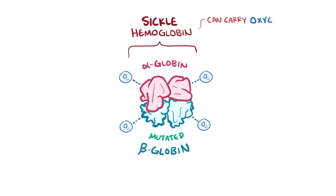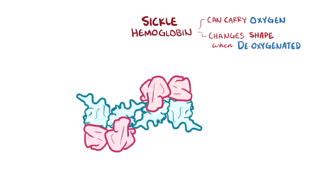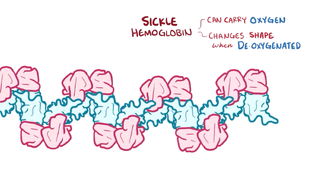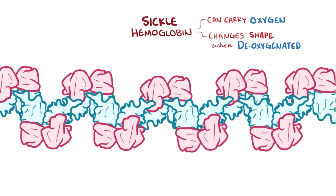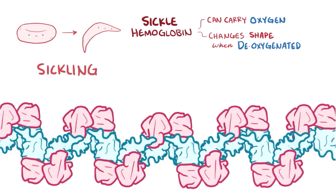HbS carries oxygen perfectly well, but when deoxygenated, HbS changes its shape, which allows it to aggregate with other HbS proteins and form long polymers that distort the red blood cell into a crescent shape, a process called sickling.